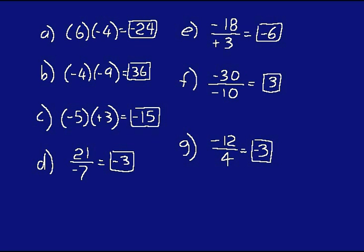In multiplication or division, when you're working with pairs of numbers, different signs give you a negative result and same signs give you a positive result. Okay, that's all for lesson 73.